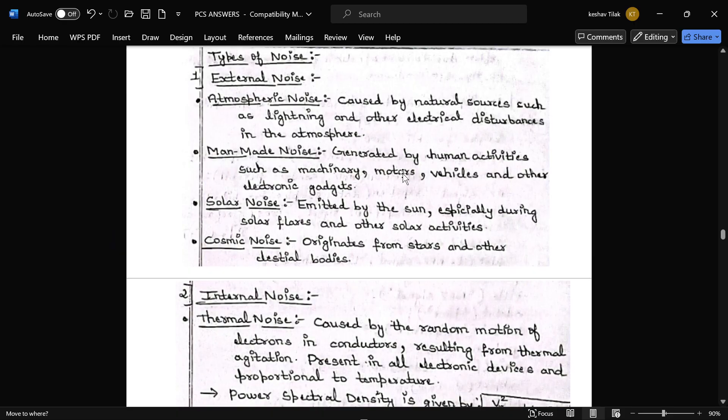Source such as lightning and electrical disturbance in the atmosphere. And next is man-made noise. That is generated in human activities like machinery, motors, vehicle and other electronic gadgets. Next is solar noise emitted from the sun especially during the solar flares and other solar activities. Next is cosmic noise. That is originated from stars and other celestial bodies.